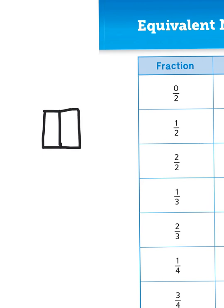1 half would be represented this way — filling one of the two portions of that square with yellow represents that that is 1 half.